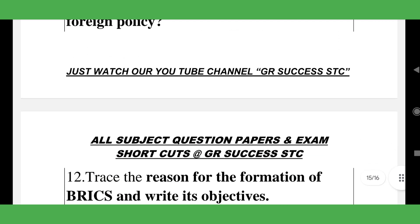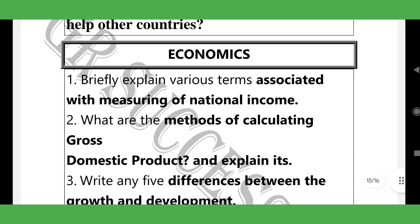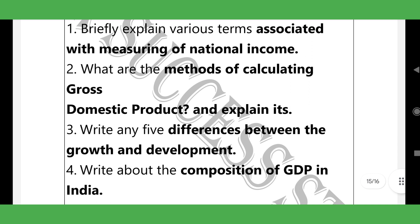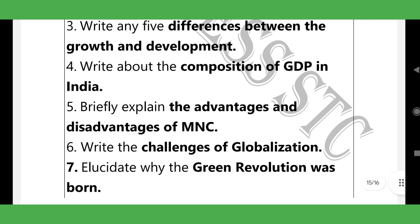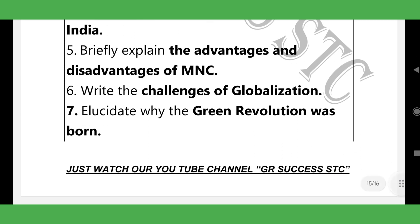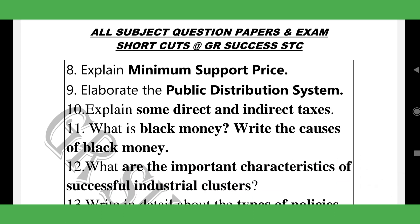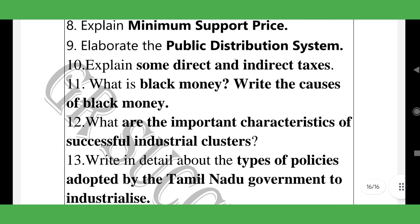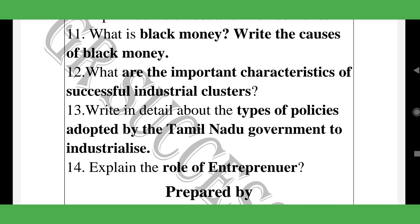Non-Alignment Movement — very important question. Foreign policy, BRICS, OPEC — about 12 to 13 five-mark questions in civics. Economics five-mark questions: National Income methods of calculation, difference between growth and development, GDP, multinational companies, challenges of globalization, Green Revolution, Minimum Support Price, Public Distribution System, direct and indirect taxes — most important — black money, successful industrial clusters, GST, Tamil Nadu government's role internationally.